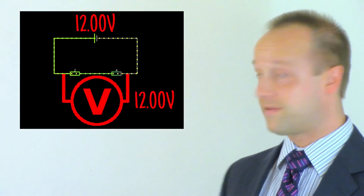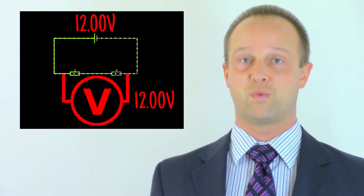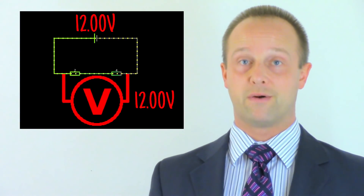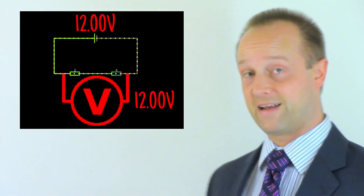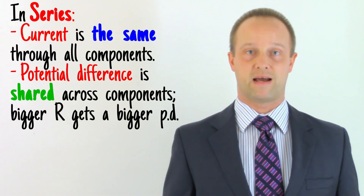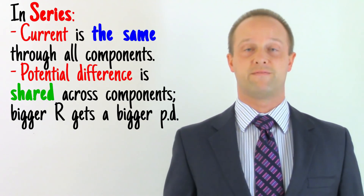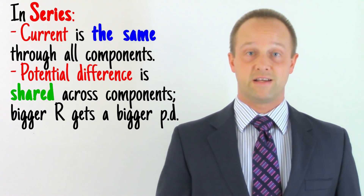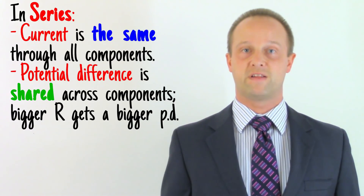The total potential difference across all of the components adds up to whatever potential difference we put into the circuit. Also note that when we measure the potential difference, we're comparing energy at two different points — usually before and after a component — to see how much energy has been used up. Our voltmeter has to connect to both of these points to do a comparison, so the voltmeter is always connected in parallel. In summary, in a series circuit, the current is the same through all the components in series, and we measure that with an ammeter in series too. The total energy — the potential difference — is shared out across the components, and we measure that with a voltmeter in parallel. You just need to know that the bigger resistances get a bigger share of the total potential difference, because it takes more energy for the current to flow through them.